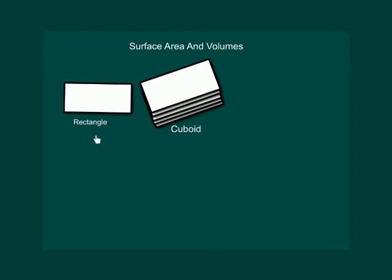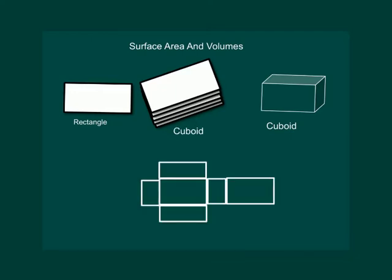If many rectangles are stacked over one another, we get a figure called a cuboid. Now suppose we have to cover this cuboid with some paper. We would require 6 rectangular pieces of paper to cover the complete outer surface of the cuboid. First we would need a rectangular piece to cover the bottom of the cuboid.